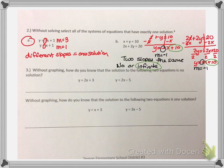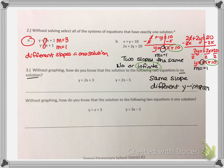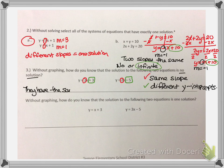The next question asks: without graphing, how do you know that the solution to the following two equations is no solution? I need to think about what no solution looks like. No solution means the equations will have the same slope. I'll check: the slope in the first equation is 2, and the slope in the second is also 2 — same slope. Then I check the y-intercepts: we have positive 3 and negative 5 — different y-intercepts. So I know this because they have the same slope and different y-intercepts.